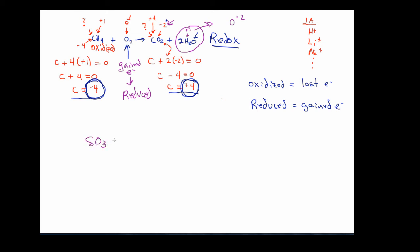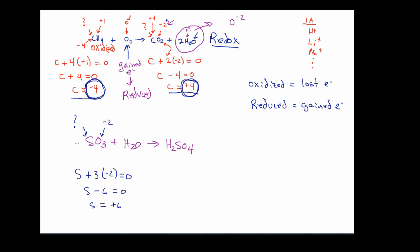Let's work a second example: SO3 plus H2O to make sulfuric acid, H2SO4. There are no individual pure elements present in this reaction, so we need to determine the oxidation number for each element in each compound. Starting with SO3: oxygen in a compound is minus two, and sulfur is our unknown. So it's S plus three times minus two equals zero, which gives S minus six equals zero, so S equals plus six in SO3.